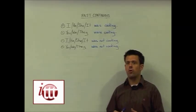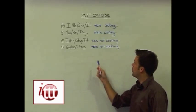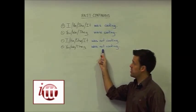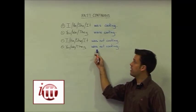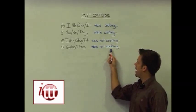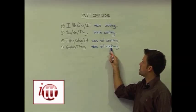In order to form the negative sentence for the past continuous, we add the word not in between the past form of the helping verb to be and our main verb, which here is cooking.